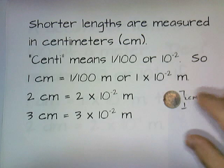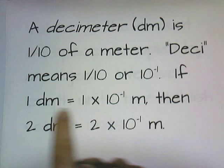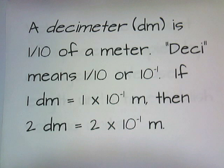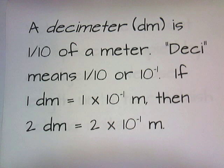If we take a meter stick and slice it into ten pieces instead of a hundred pieces, we get something called a decimeter. A decimeter is one-tenth of a meter. Deci means one-tenth, or ten to the negative one. So one decimeter is one times ten to the negative one meters, two decimeters is two times ten to the negative one meters, and so on. A decimeter is about the height of a coffee mug — from here to here, that's about one decimeter.